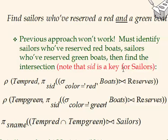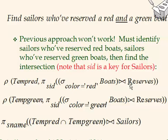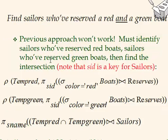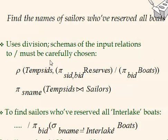For the query finding sailors who reserved both a red and a green boat, we first get the sailor IDs who reserved a red boat and those who reserved a green boat separately, then take the intersection of these two sets. We then join the result with sailors to retrieve their names.